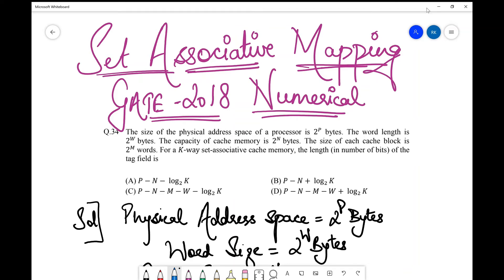Hello friends, welcome back to my channel. Today in this video we are going to discuss a set associative mapping question from GATE 2018, which is a formula-based question. When I say formula-based, I mean that they have not given you the numerical values to solve. Instead, they have given some general values in the form of notation.